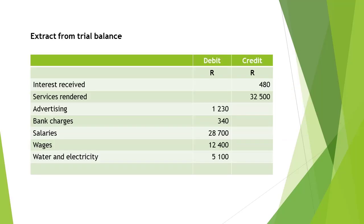On this extract from the trial balance, we are provided with the totals of the income and expense accounts from the general ledger. The first step is to close off all income accounts. Income accounts have credit balances and we will therefore need a debit entry on each of the income accounts to close it off.